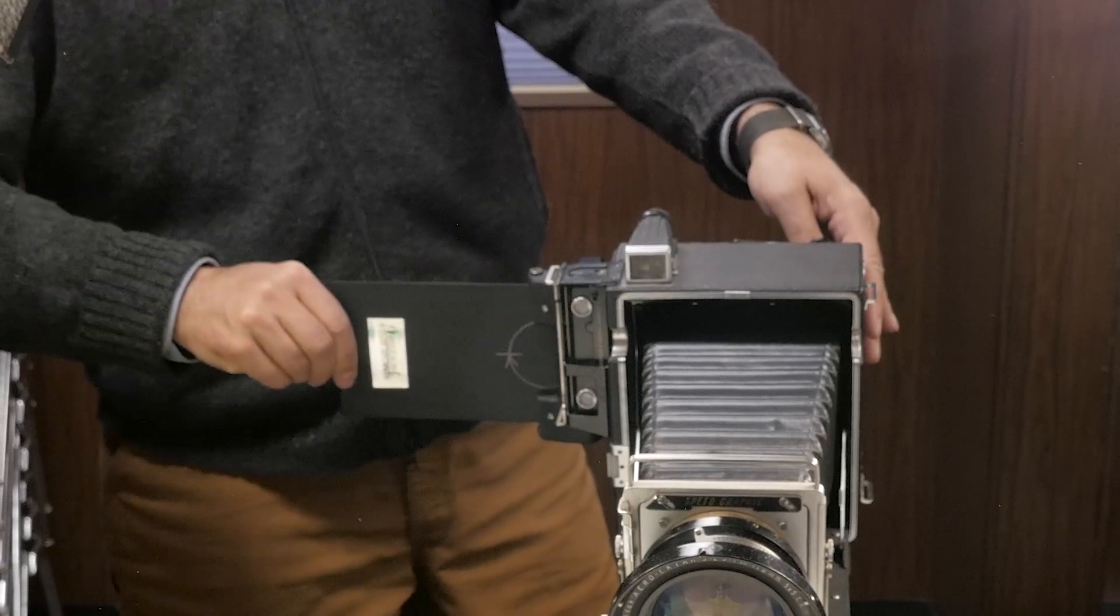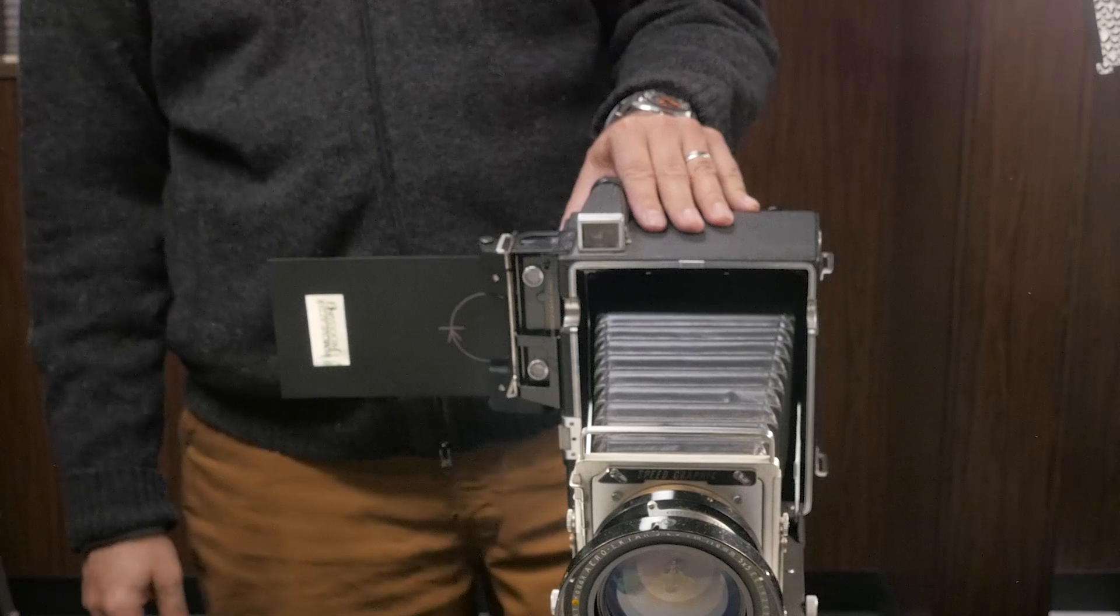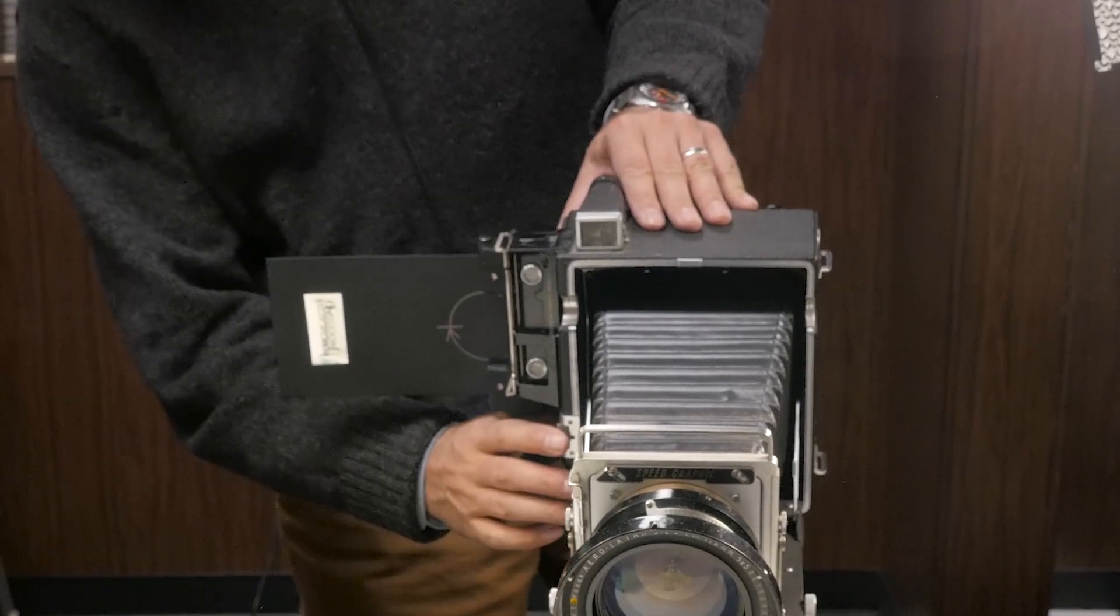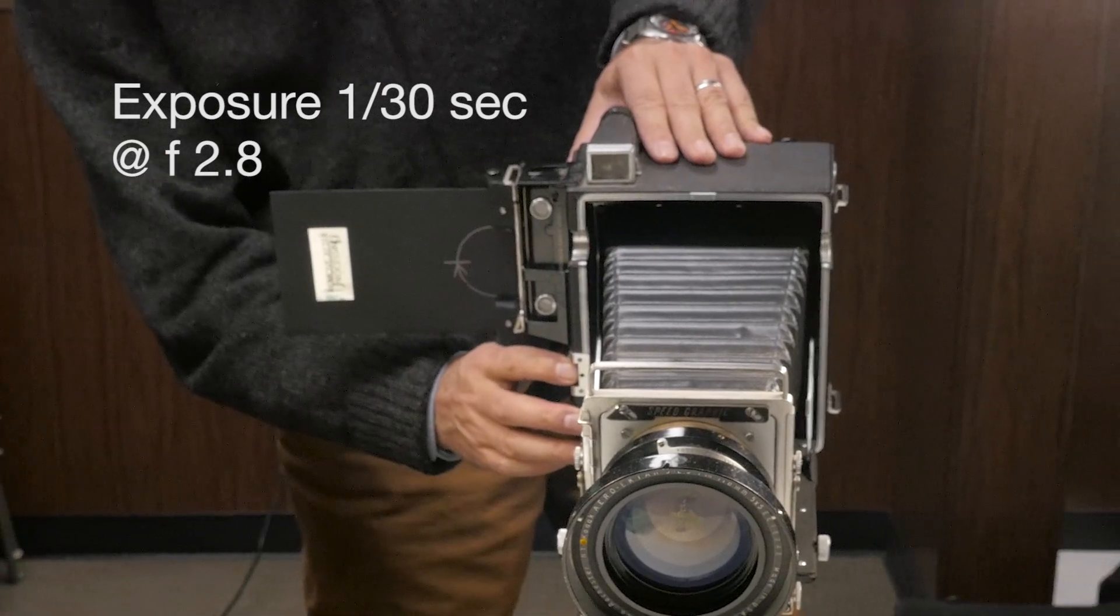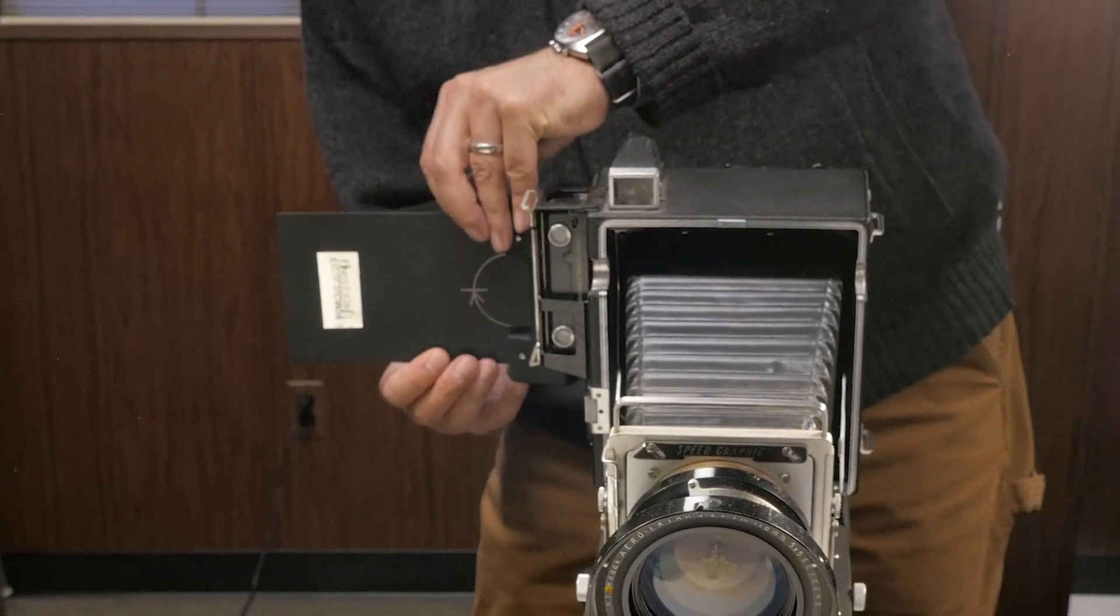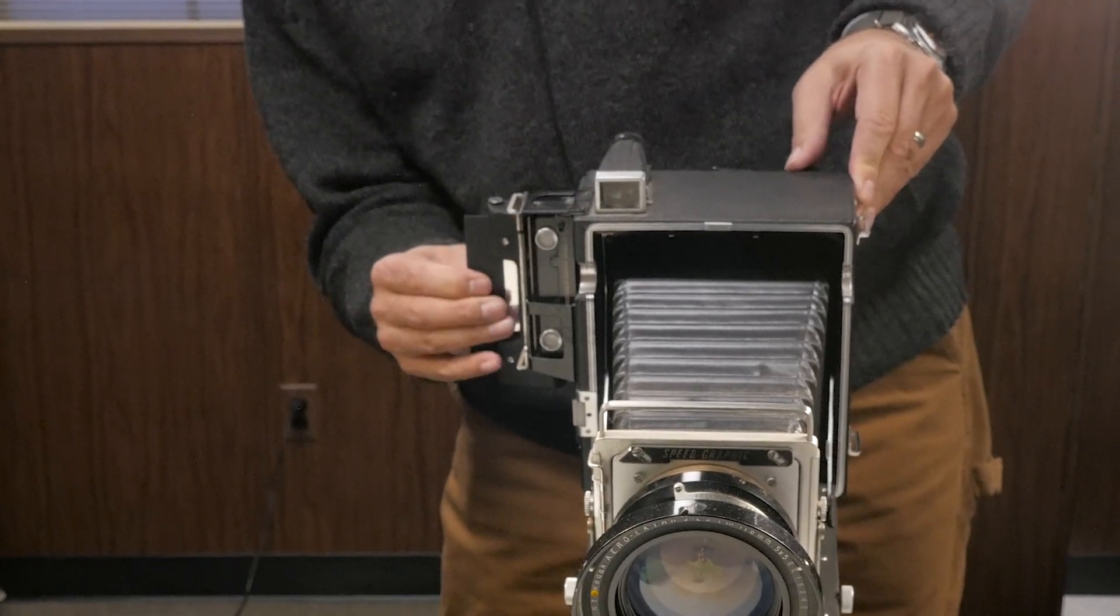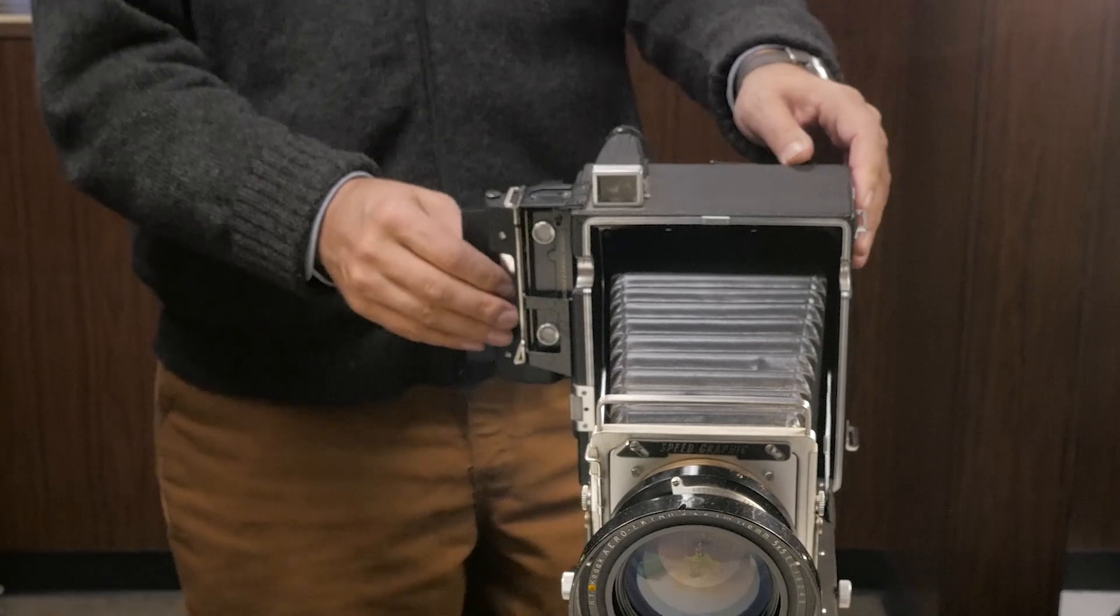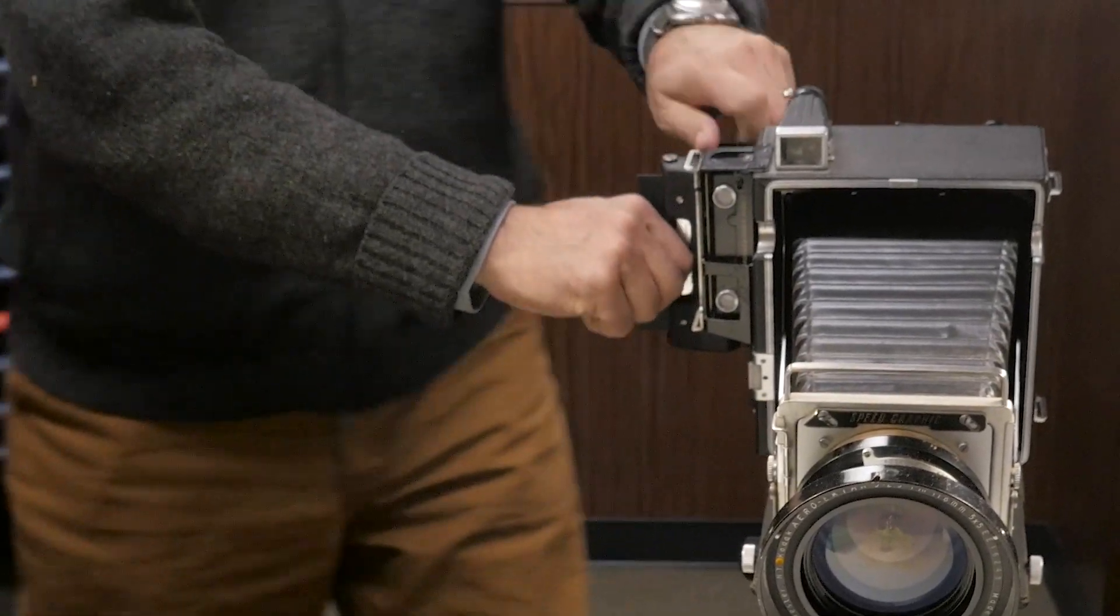Withdrawing the sleeve exposes the negative and I make my exposure. Then return the sleeve into place. Now I set the lever to process P and withdraw the packet.